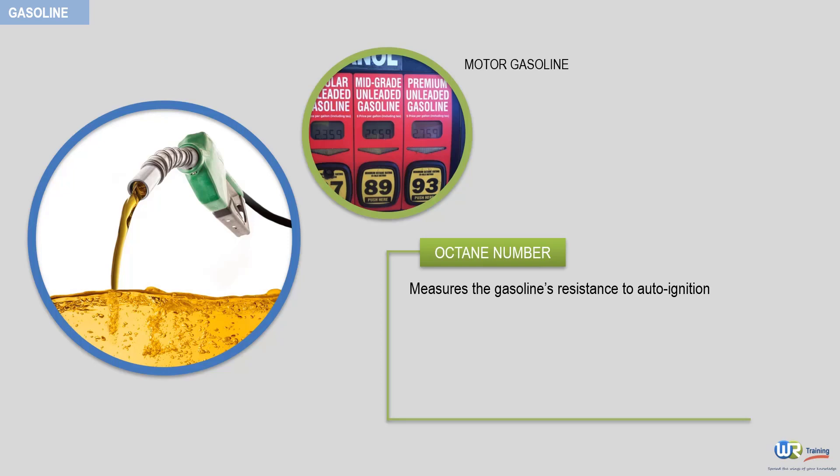Auto ignition can be detected by the well-known phenomenon of knocking. Low speed knock is easily recognizable, but high speed knock is much more difficult to detect. The resistance of gasoline to auto ignition, and therefore to knock, is measured by the octane number and is managed by accurate blending of up to 10 different components produced in the refining process.